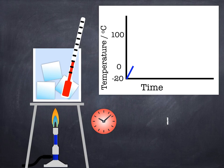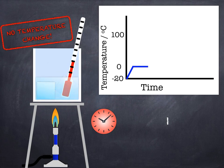As you know, the ice is going to start melting at zero degrees, turning into water. But we get this strange point where there's no temperature change on the graph even though we're adding energy.